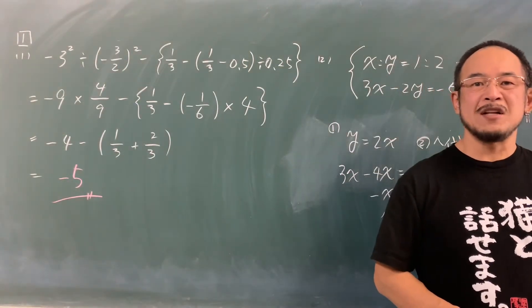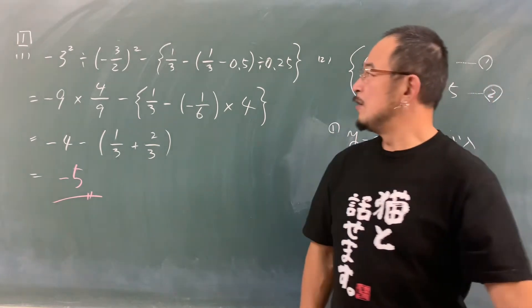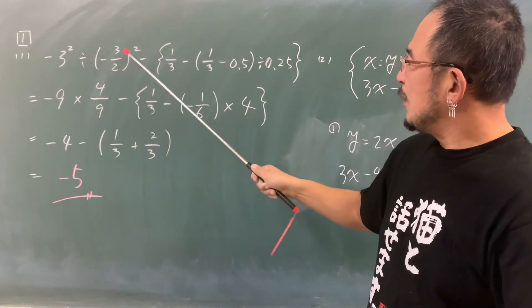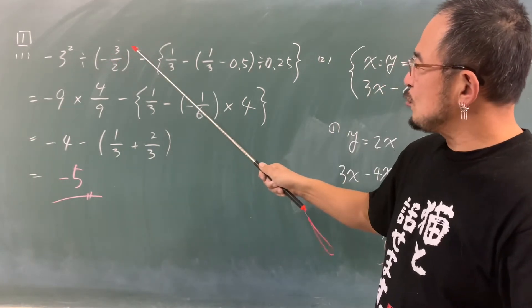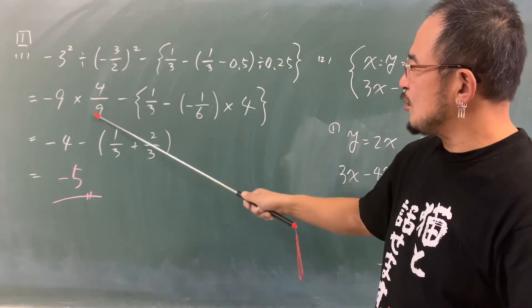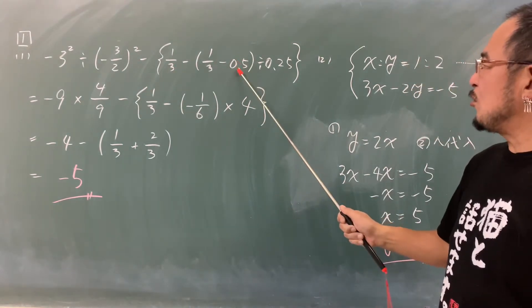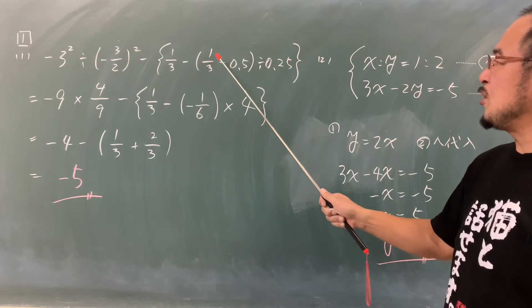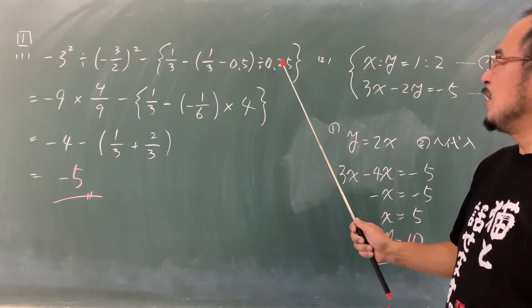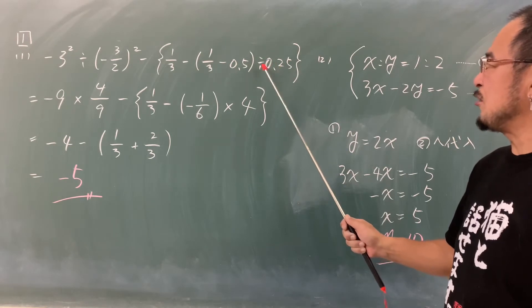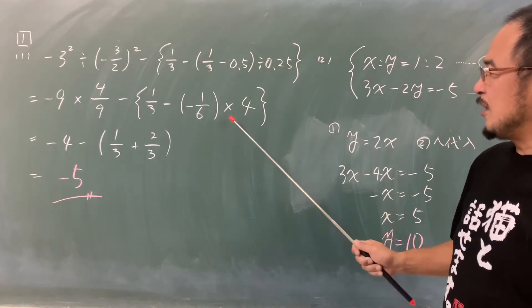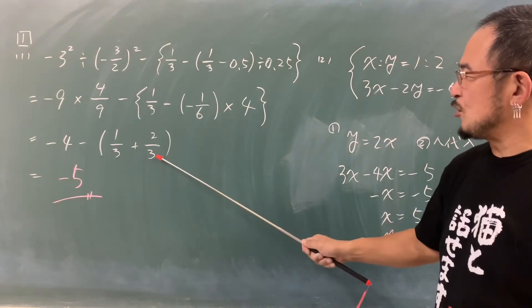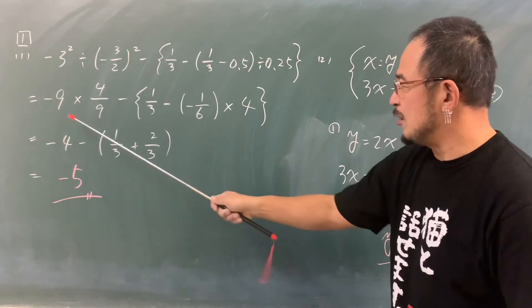明星大学附属高等学校 平成31年 数学です。3の2乗で-9から-2分の3の2乗で4分の9、ひっくり返して9分の4。0.5は2分の1ですから3分の1-2分の1、6分の2-6分の3で-6分の1。0.25は4分の1、ひっくり返してかける4。-3分の2でプラス3分の2ですね。約分しておいて-4。